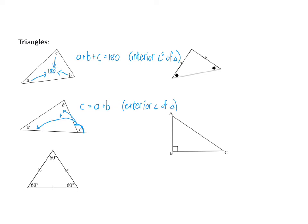Next up, I have my equilateral triangle, where all the sides of the triangle are the same length. From that, I can say that the angles are all the same size, and they have to be 60 degrees to still add up to 180 degrees. So angle A is equal to angle B, which is equal to angle C, and they are all 60 degrees. My reason: it is an equilateral triangle.